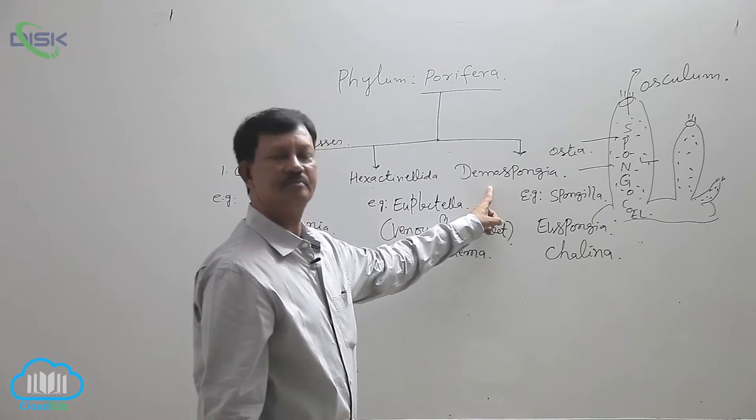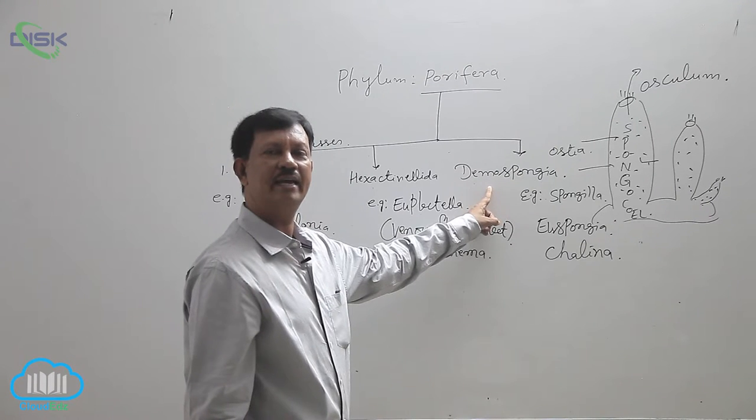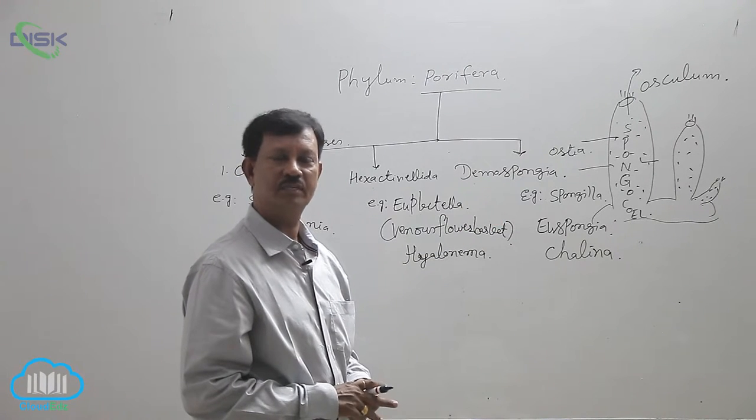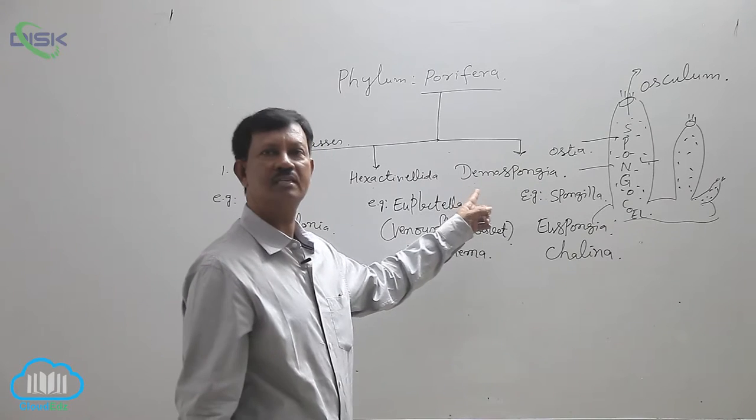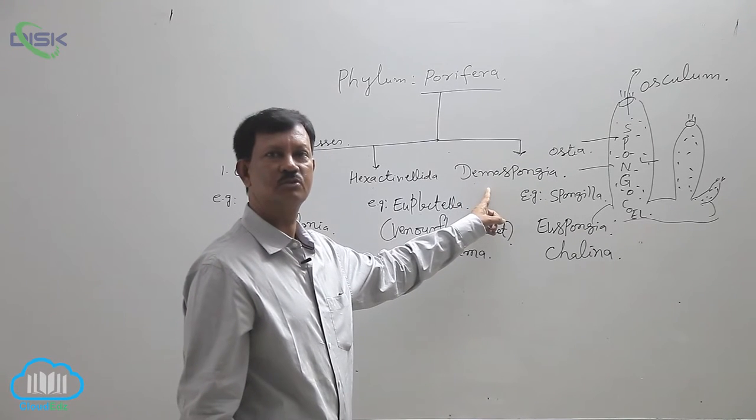Next class, Demospongia. These are found in marine water as well as in freshwater. Freshwater examples are Spongilla. They are colonial forms only.